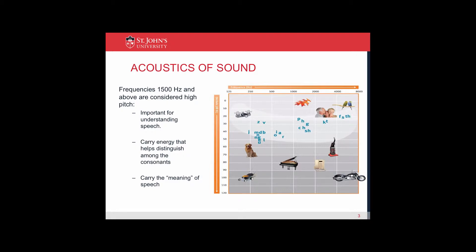This is a picture of the audiogram. As you can see, high-frequency sounds, which are very soft, include the F, the S, and the TH. Low-frequency sounds, which are easier to hear, include the M, the N, the G, and the AH.